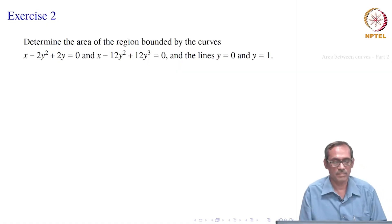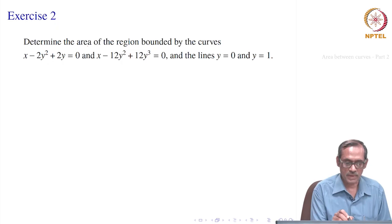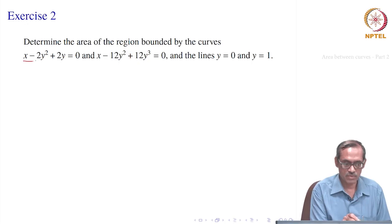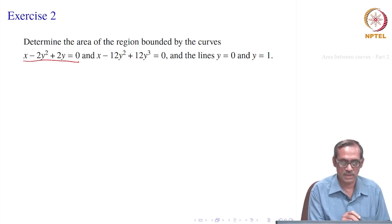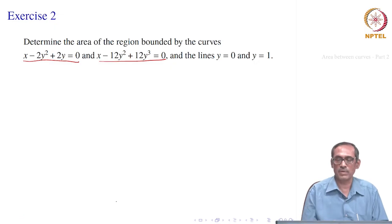Let us take another problem. We want to determine the area of the region bounded by the curves x minus 2y² plus 2y = 0, given implicitly, and x minus 12y² plus 12y³ = 0. These are the two curves, along with the lines y = 0 and y = 1.